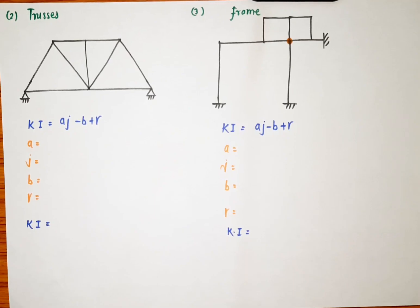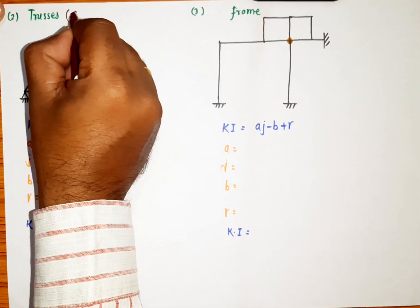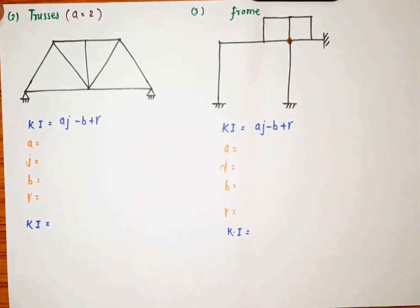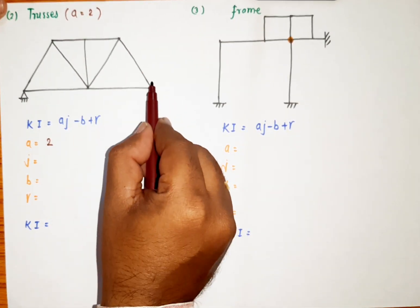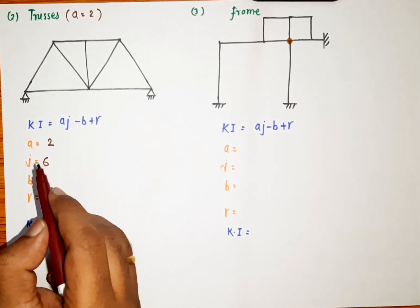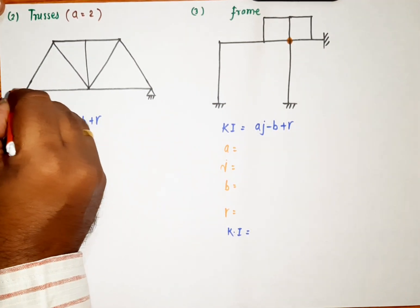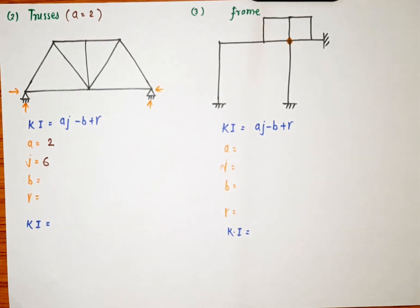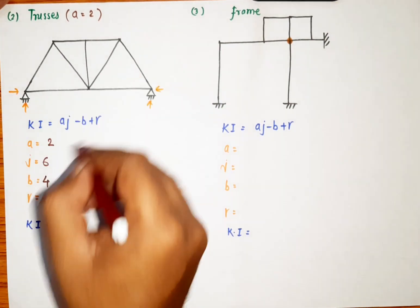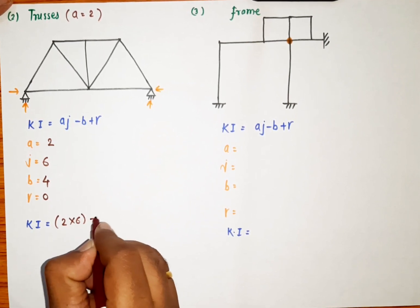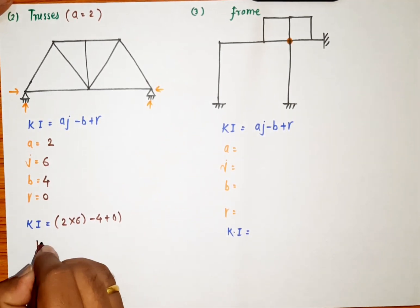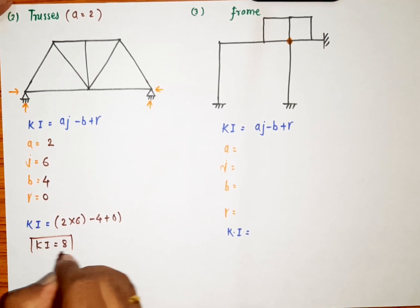Let us consider the next problem, which is a truss. For a truss, a = 2, since there are only two degrees of freedom available at each joint — delta x and delta y. The number of joints j = 6. For reactions b: there are two hinges, each providing two reactions, giving b = 4. There is no internal hinge, so γ = 0. Therefore kinematic indeterminacy = 2 × 6 − 4 + 0 = 12 − 4 = 8.